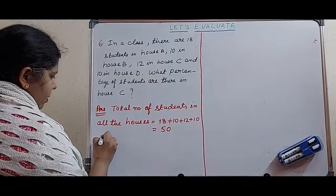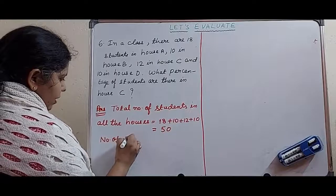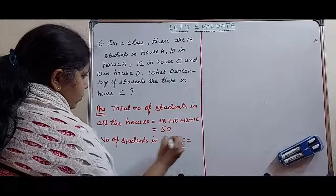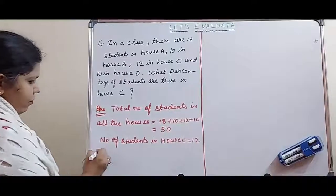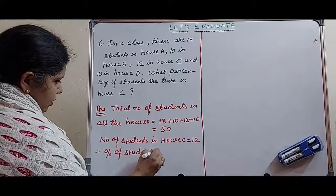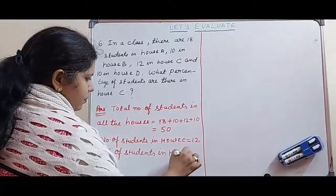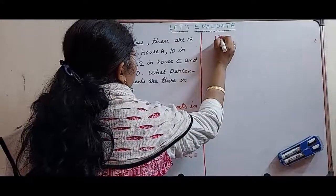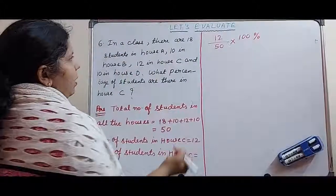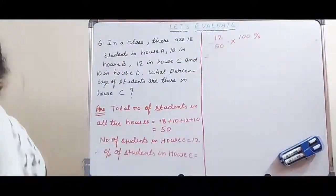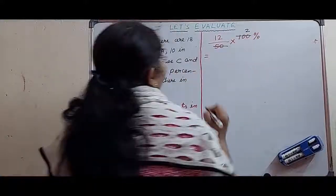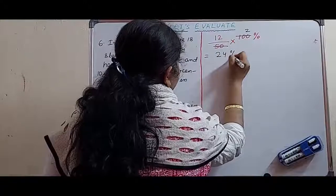Write down here number of students. First we will write number of students only in house C. Number of students in house C equal to 12. Therefore, percentage of students in house C equal to 12 out of 50 total number of students, into 100. Don't forget to give the percentage symbol. We will solve this. 50 into 2 is 100, and 12 times 2 is 24 percent. This is your answer.